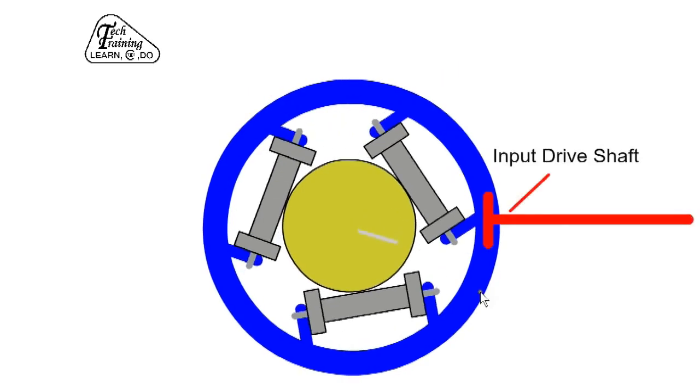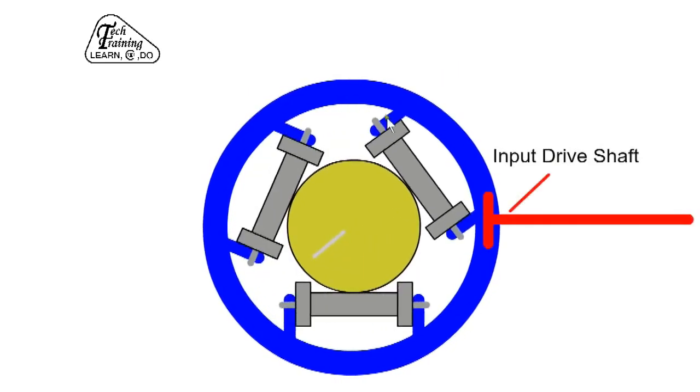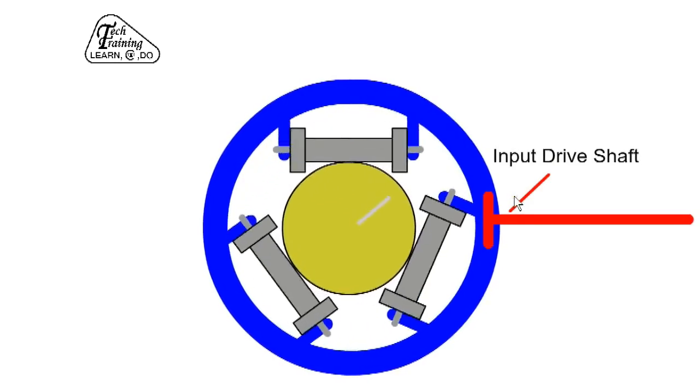When travelling in a straight line, the crown gear rotates and drives both half shafts at the same speed via the worms.